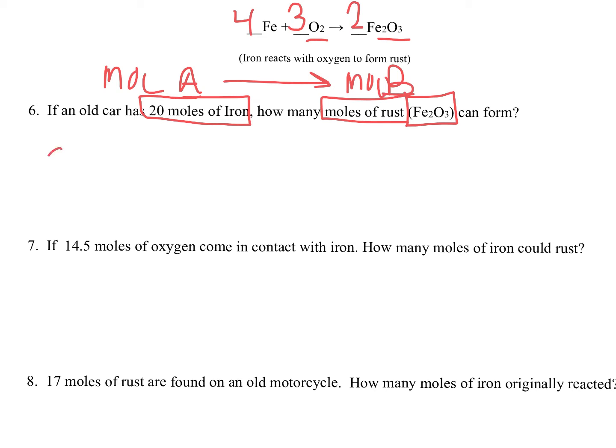Start with what I have. I have 20 moles of iron. Iron is Fe. And I need to convert that to moles of rust. So let me use my balanced equation. I've got four moles of iron for every two moles of Fe2O3, which is rust. So that's a four to two ratio.